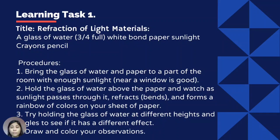The activity you are going to perform will clearly describe how light interacts with different materials. Learning Task 1: Refraction of Light. You need the following materials: a glass of water three-fourths full, white bond paper, sunlight, crayons, and pencil.